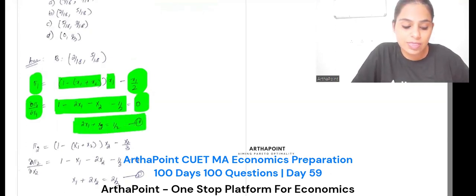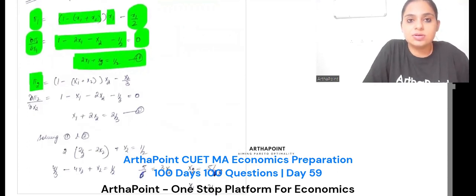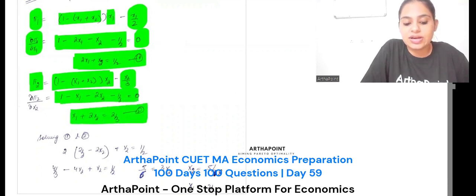Do it yourself again. You're given the profit function. Differentiate this with respect to x2. So profit is revenue minus cost. Differentiate with respect to x2, equate it to 0, and get the condition.